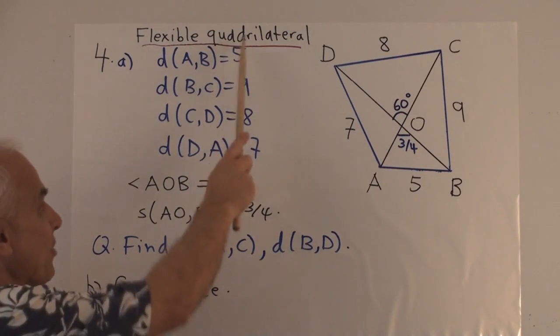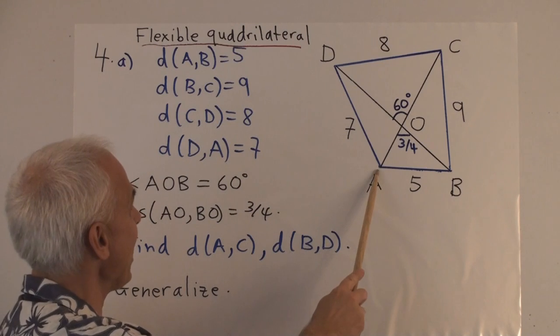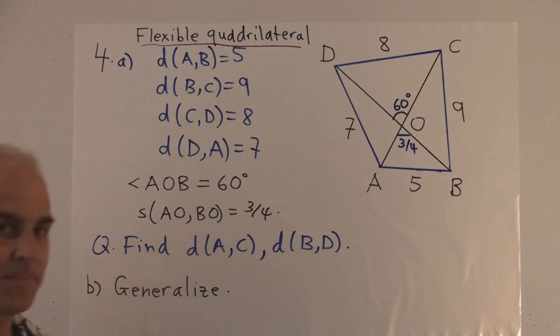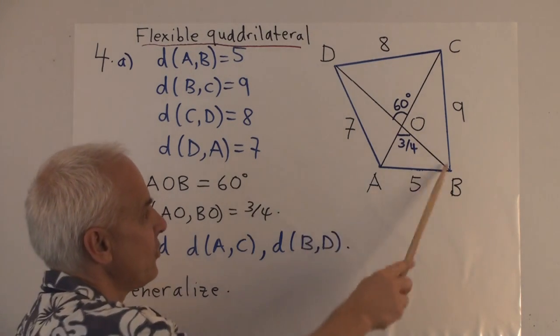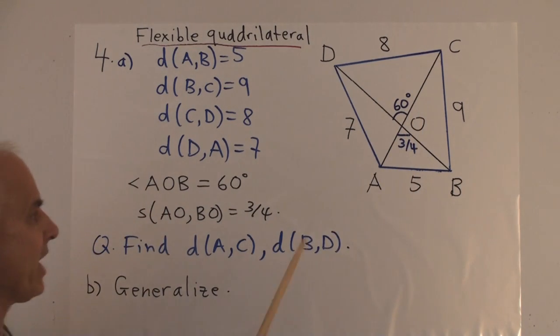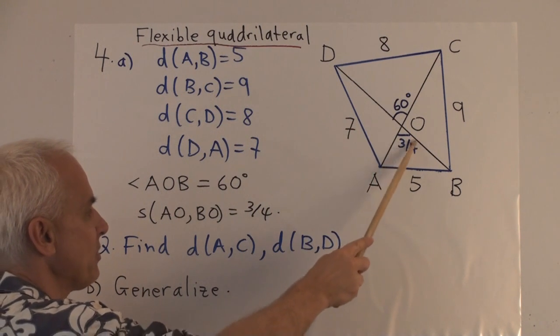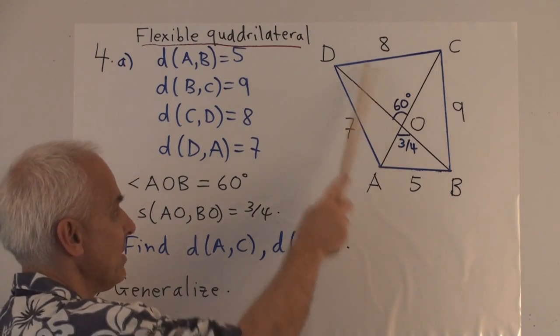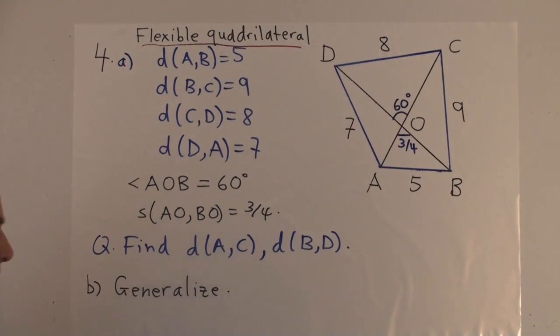And our fourth and final problem we call flexible quadrilateral. We have a quadrilateral with side lengths 5, 9, 8, and 7. And the other thing that we know about this quadrilateral is that the two diagonals meet at 60 degrees, or a spread of 3 quarters. And what we'd like to do is find the distance between A and C and between B and D, the length of these diagonals.